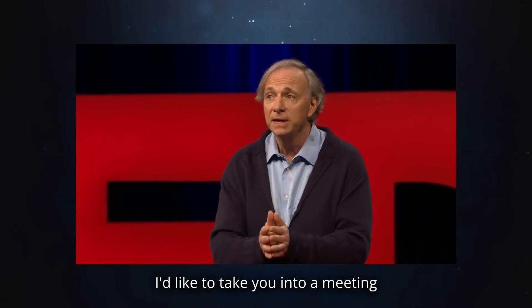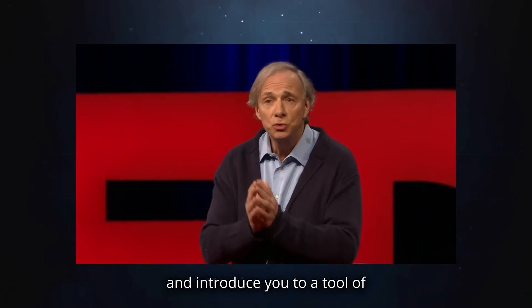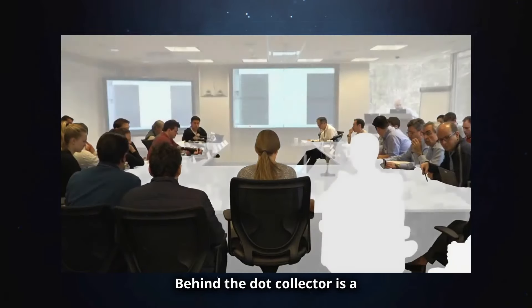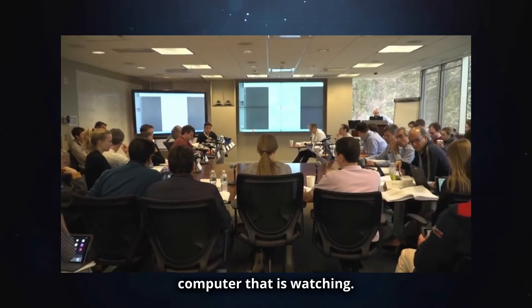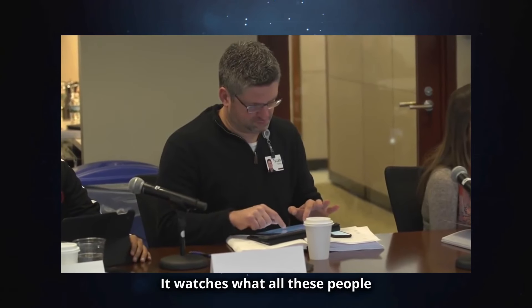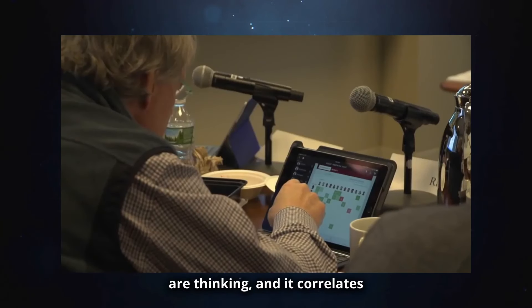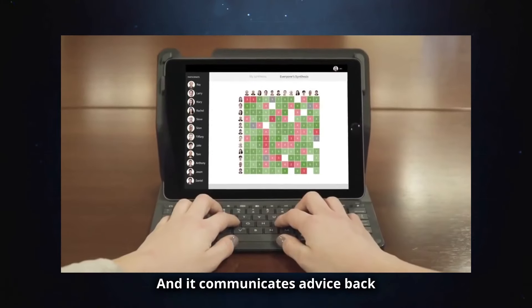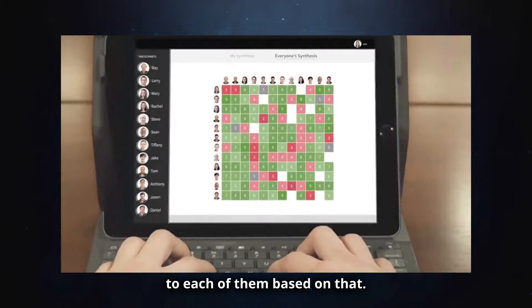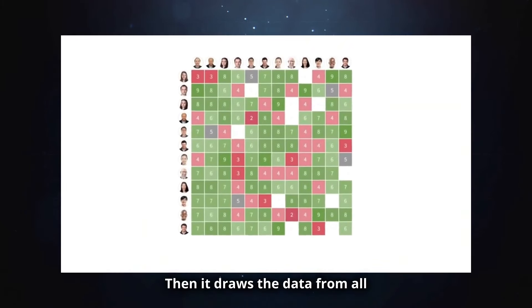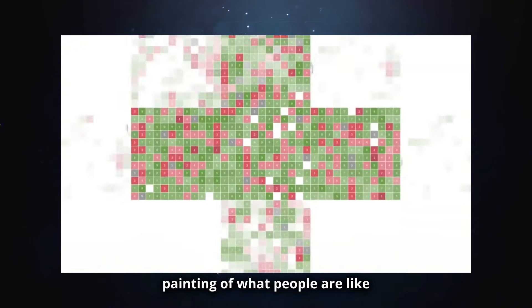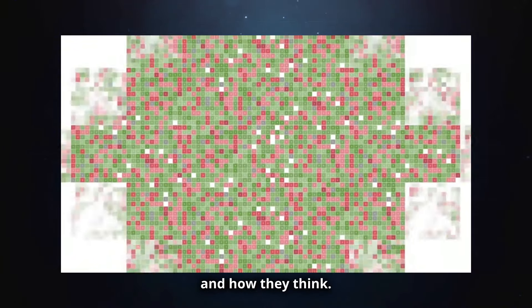I'd like to take you into a meeting and introduce you to a tool of ours called the Dot Collector. Behind the Dot Collector is a computer that is watching. It watches what all these people are thinking, and it correlates that with how they think. Then it draws the data from all the meetings to create a pointillist painting of what people are like and how they think.